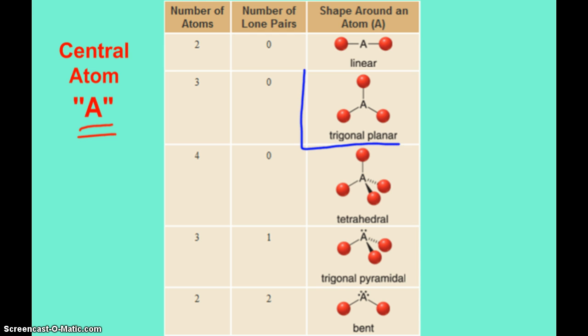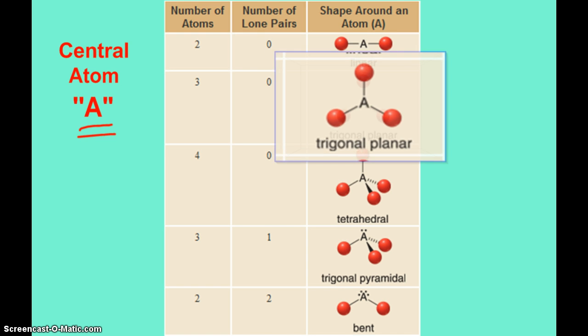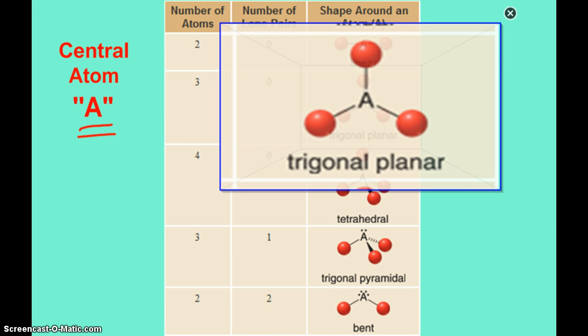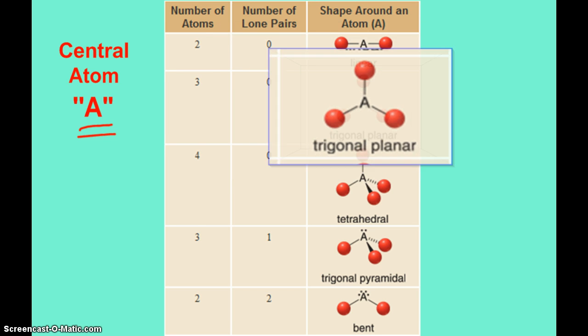If there are three atoms around my central atom, and no lone pairs, then it's going to be in a trigonal planar fashion. All four of these atoms will be in the same plane, and you can view like the tips of a triangle. They're going to be about 120 degrees apart from each other, those outer atoms.